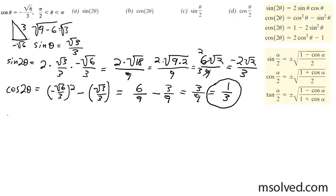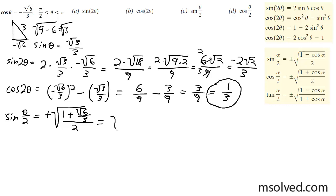Now let's find the half angle of sine of theta divided by 2. The half angle takes it into quadrant 1, so it's a positive value. It's plus square root of 1 minus the cosine, which involves adding a positive value since the cosine is negative. That gives square root of 3 plus root 6 over 3, all over 2, which ultimately simplifies to square root of 3 plus root 6, all over 6.